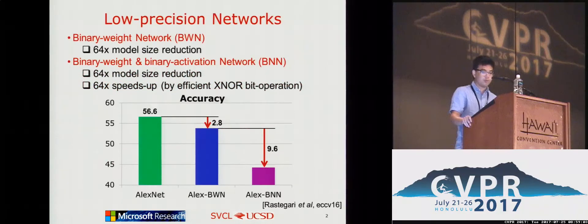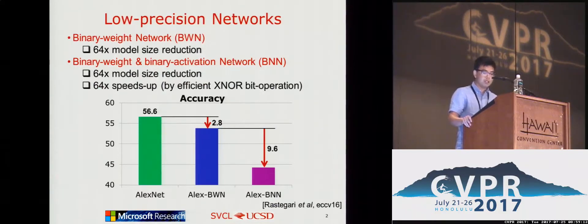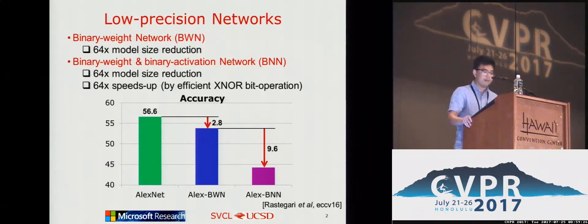There are two popular low precision networks. The first one is binary weight network, which enables 64 times model size reduction. The second one is binary weight and binary activation network. In addition to model size reduction, it also enables 64 times speed up by efficient bitwise operations. However, BNN drops so much accuracy from the full precision network, mainly due to its binary activation function.